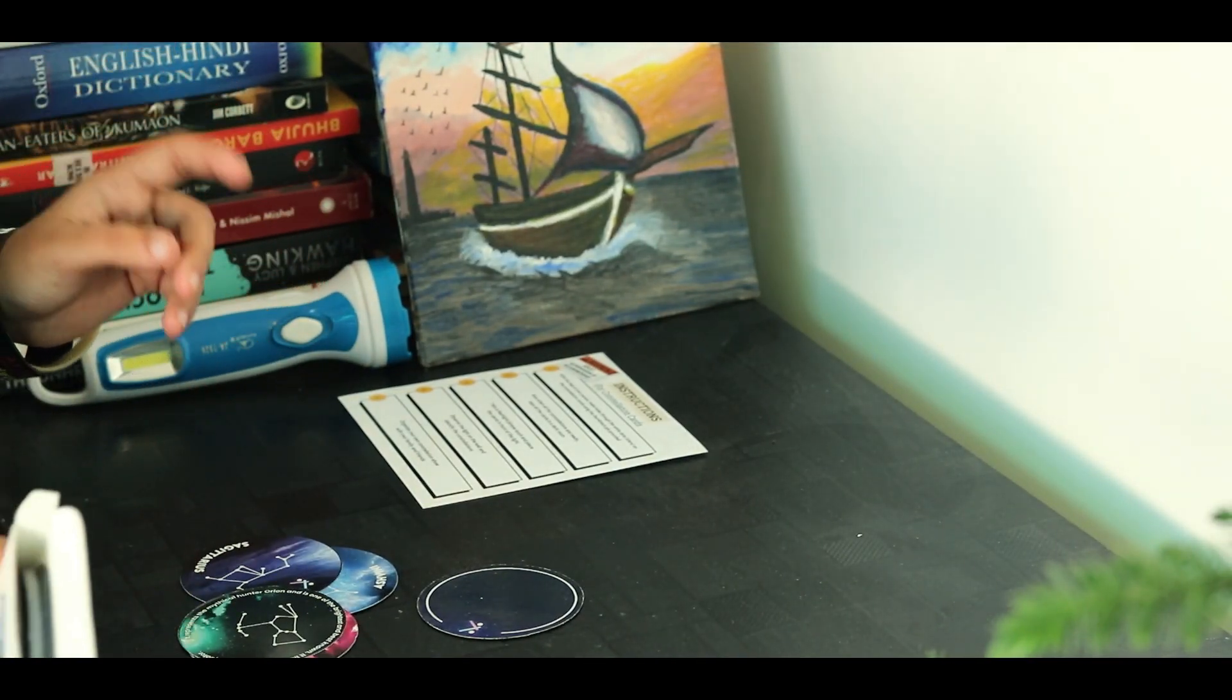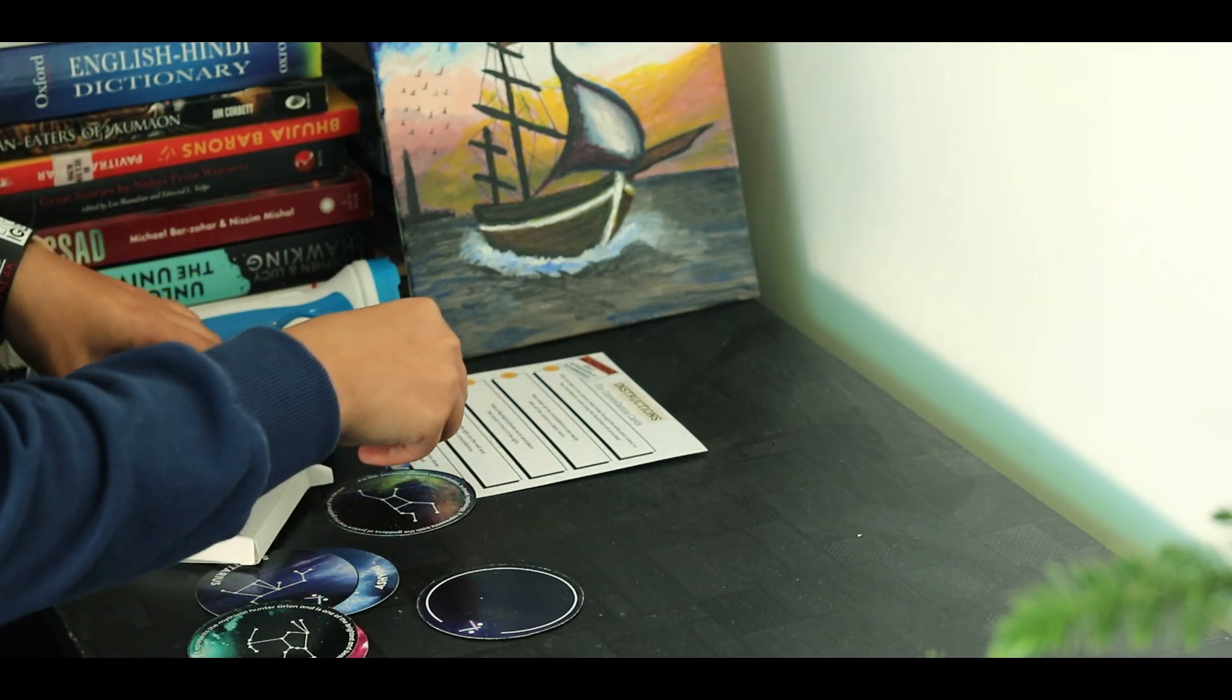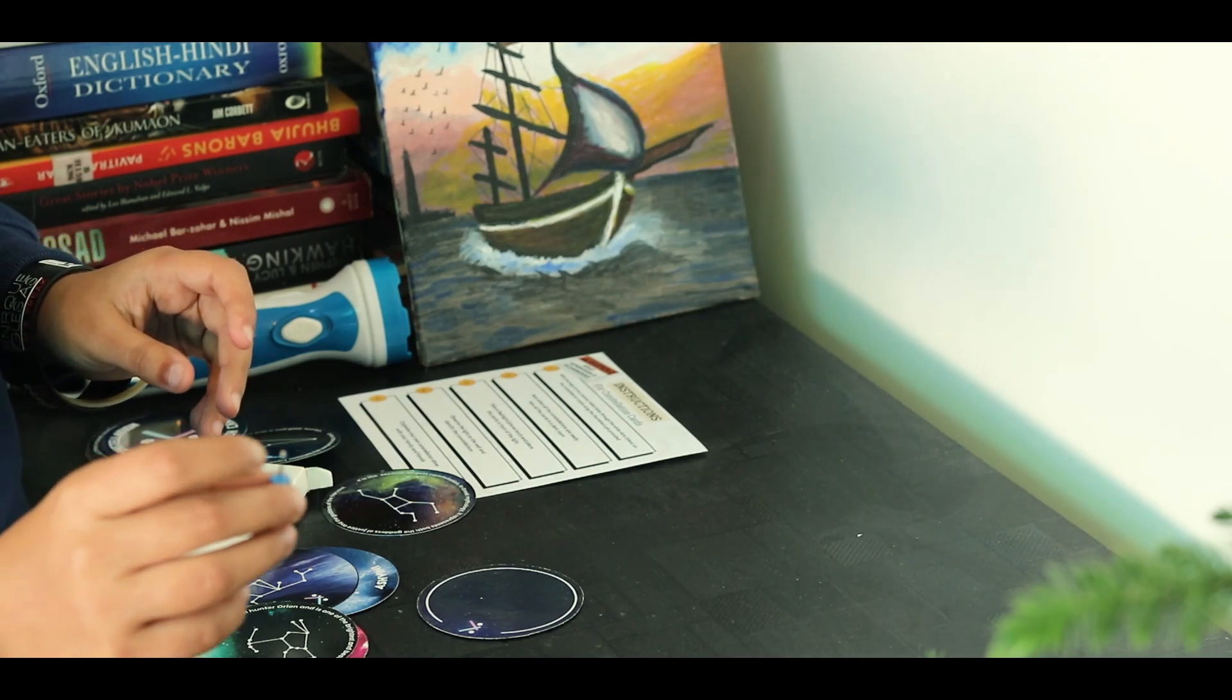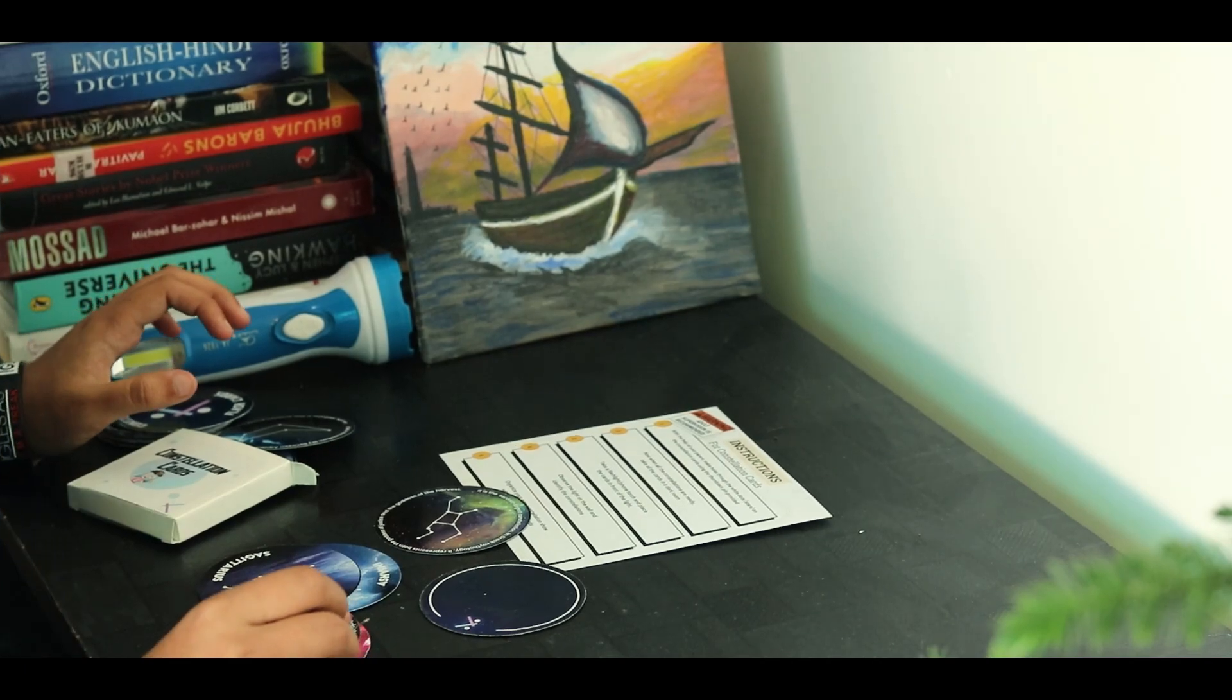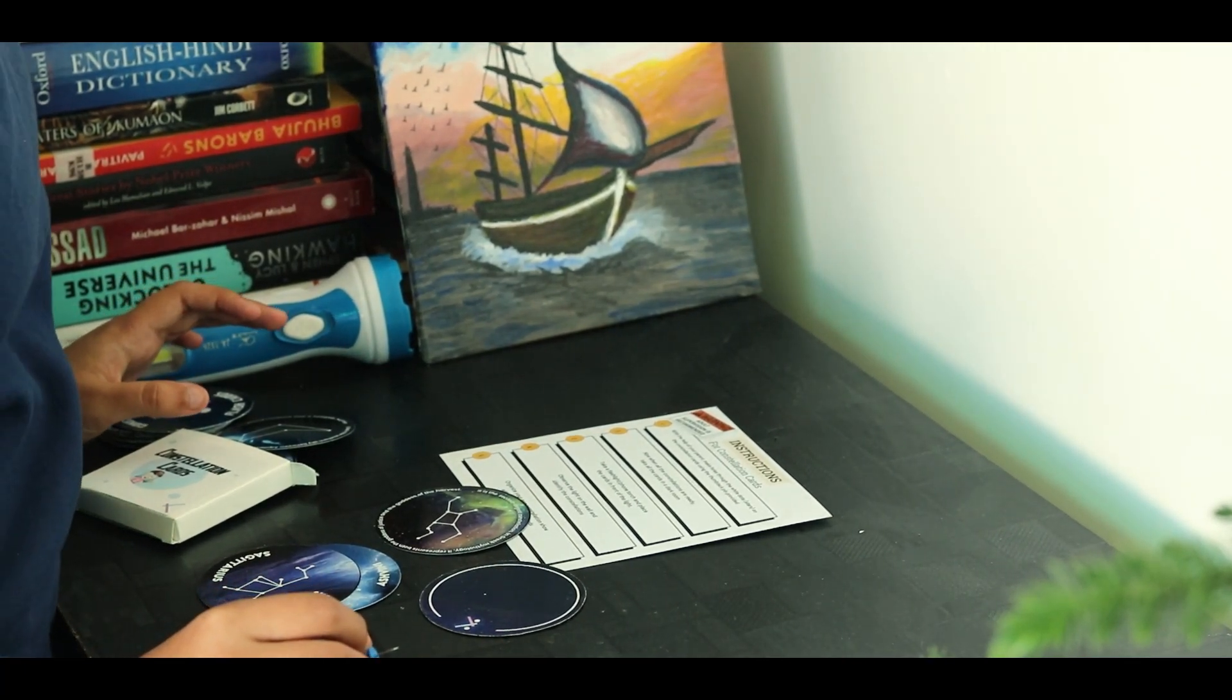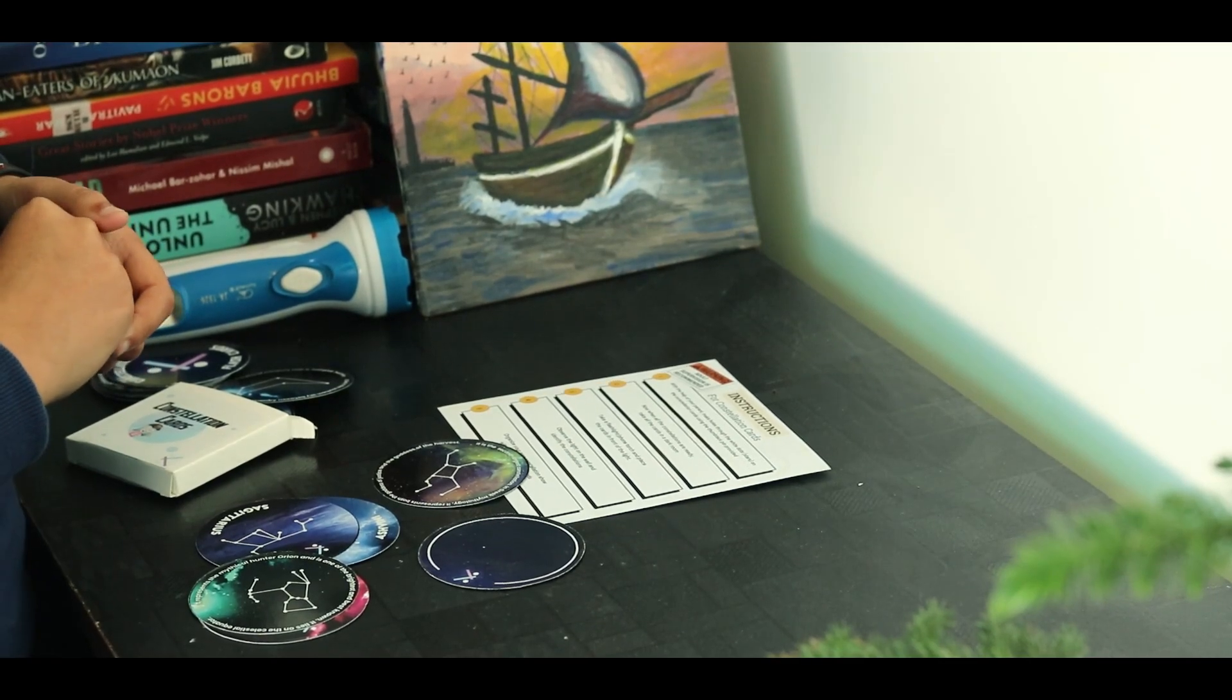Before we go outside, there is one thing we should do in advance because otherwise it will not be visible in the dark. So you will be receiving a pin like this. And let us see what is the first step. With the help of your parent, make holes through the white dots, that is the stars, on the constellation card using a thumbtack pin provided.